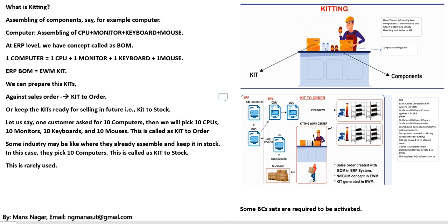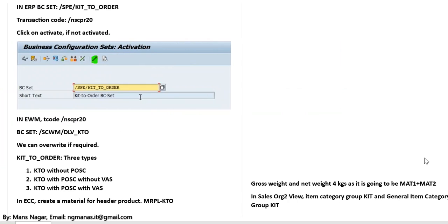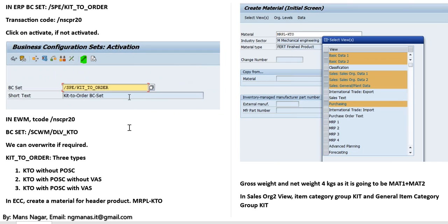Regarding BC sets — in the next section I will explain deep steps on how we create the kit and kit to order, including what the transaction codes are. The first kit type involves process-oriented storage control. There are three types: kit with process-oriented storage control, kit without value-added services, and kit with VAS.